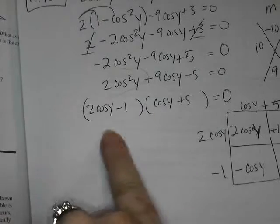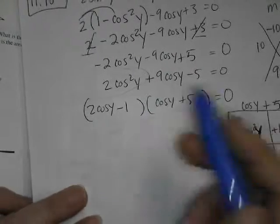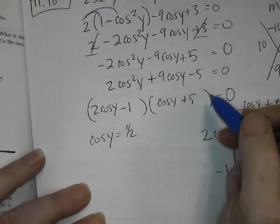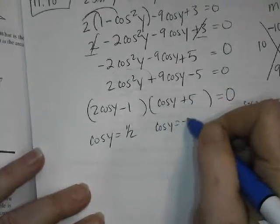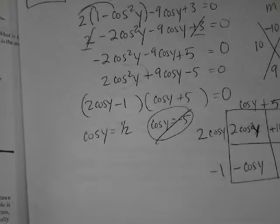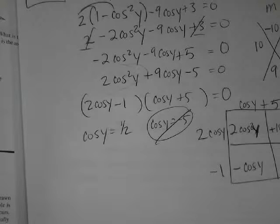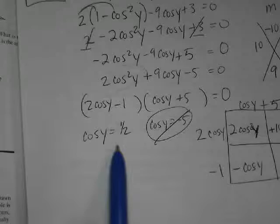And then zero product property, I can set them each equal to 0. This will give me 1 half. This will give me negative 5. We're going to throw that one away. You can't have cosine, there's no angle that's going to give you a cosine greater than the absolute value of 1, right? It's always between negative 1 and positive 1. So this one will work, though.